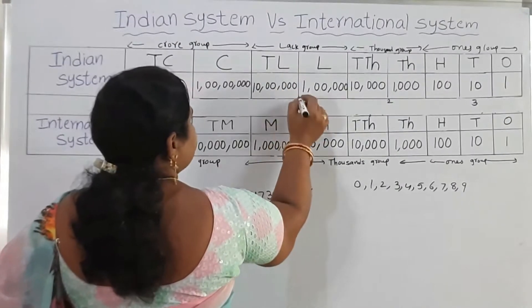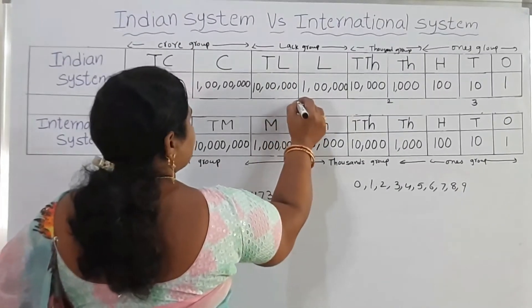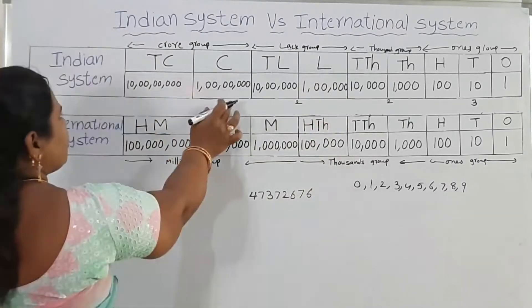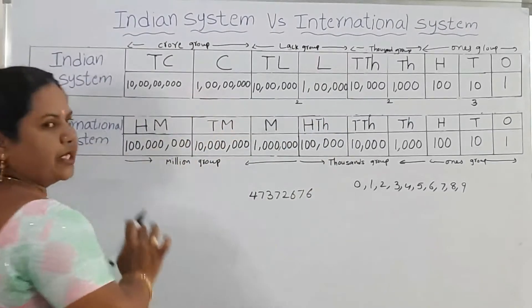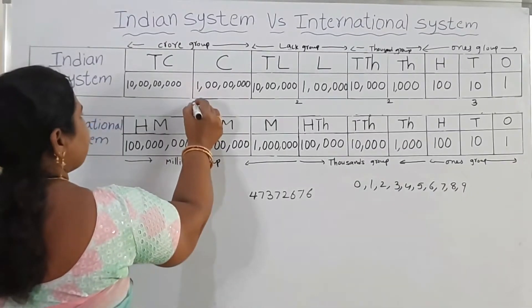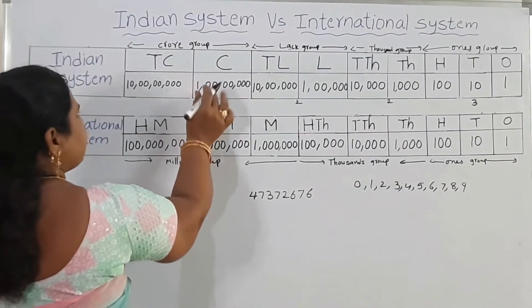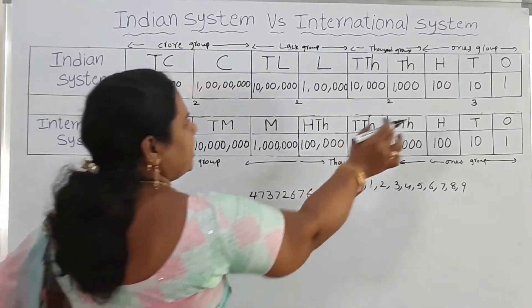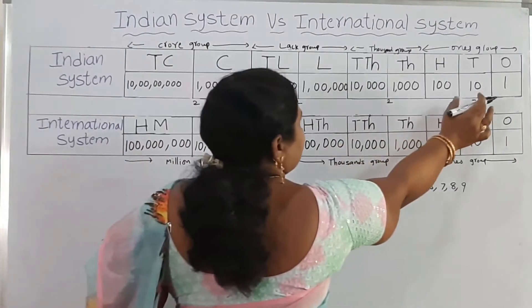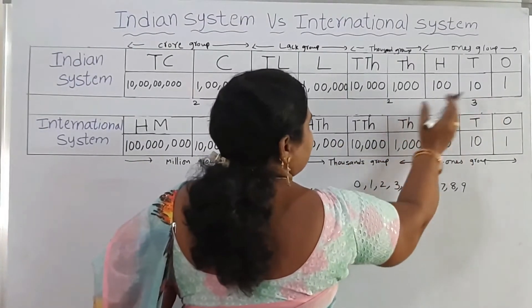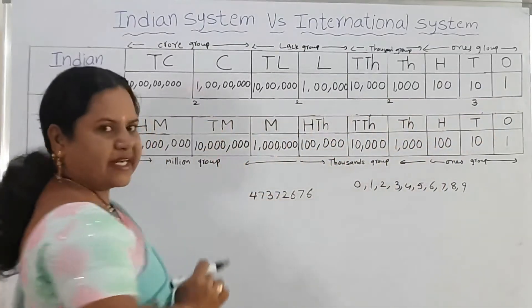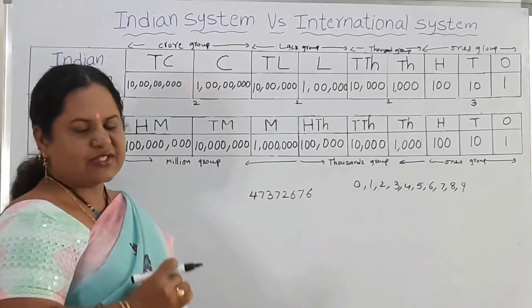Lakhs and 10 lakhs — these 2 places form the next group. Crore and 10 crore — these 2 places form the next group. So the pattern from right to left is 3, 2, 2, 2. We divide the groups following this pattern.